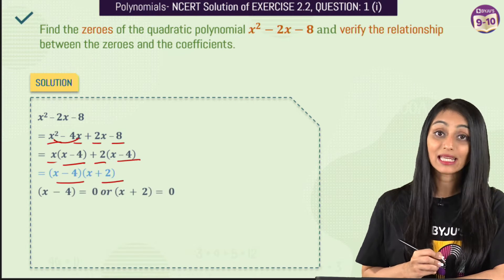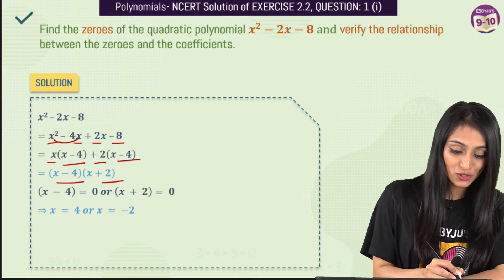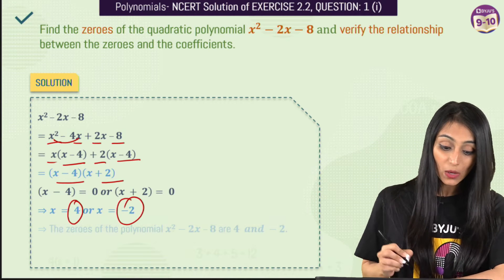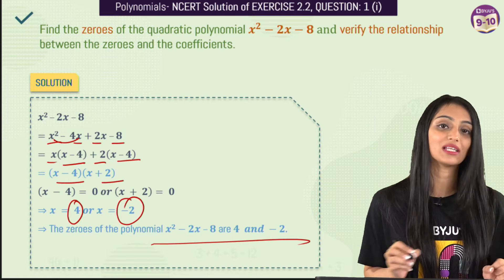Now to get the zeros, we have to equate each one of them with zero and we get the values of x that is 4 and minus 2 which is nothing but these are the zeros of this quadratic polynomial.